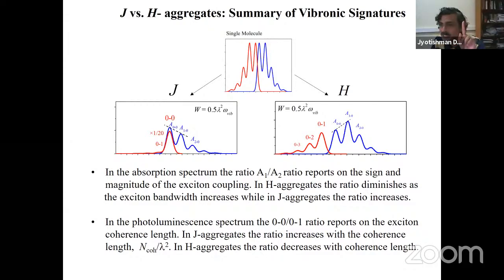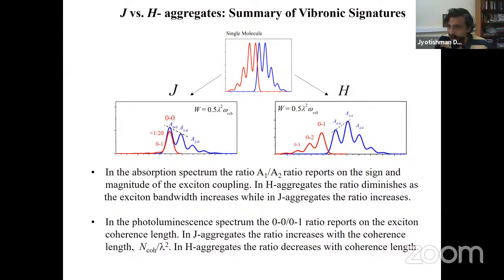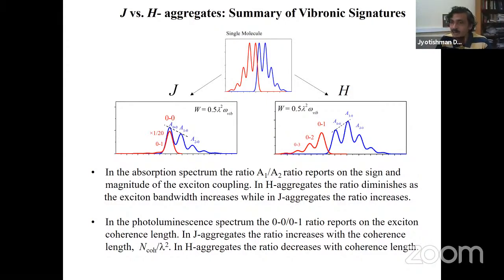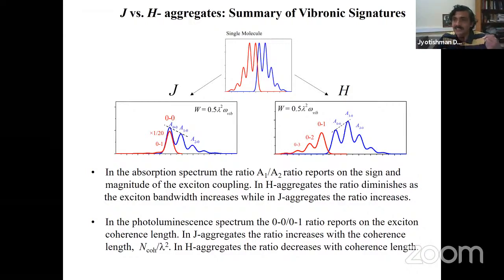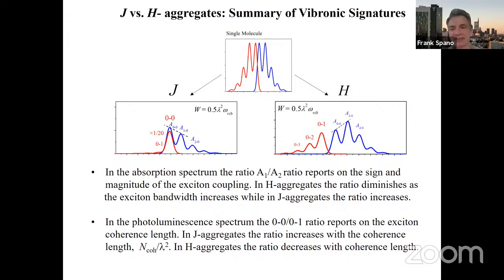Can vibronic signatures monitor this competition? That's the really fun thing. Can you tell who's winning — J or H — by looking at vibronic signatures? A question comes up: all of this is a simulation of absorption with vibronics using a single mode, the CC stretch. If you were to use multi-mode effects, will that change things?